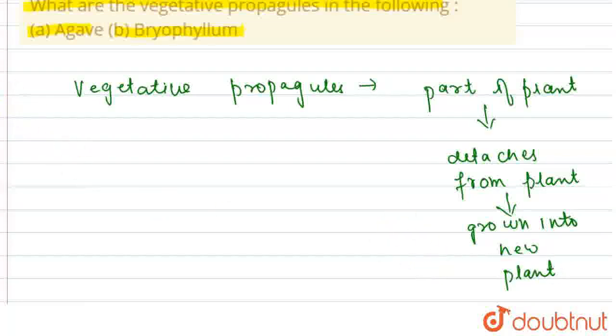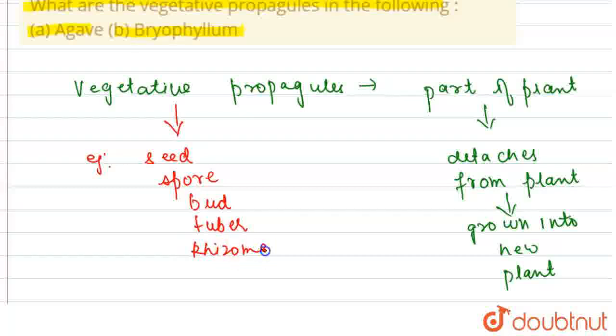Now if we talk about the example of these vegetative propagules, then they could be the seed, they could be the spore, they could be the bud, they could be the tuber and they could be the rhizome. So they are the detached parts of the plants which can grow into new plants.